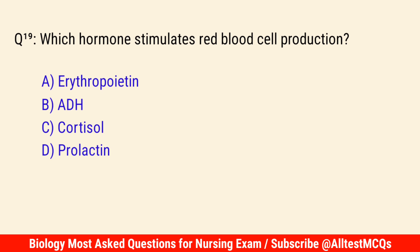Q19. Which hormone stimulates red blood cell production? The correct answer is A: Erythropoietin.